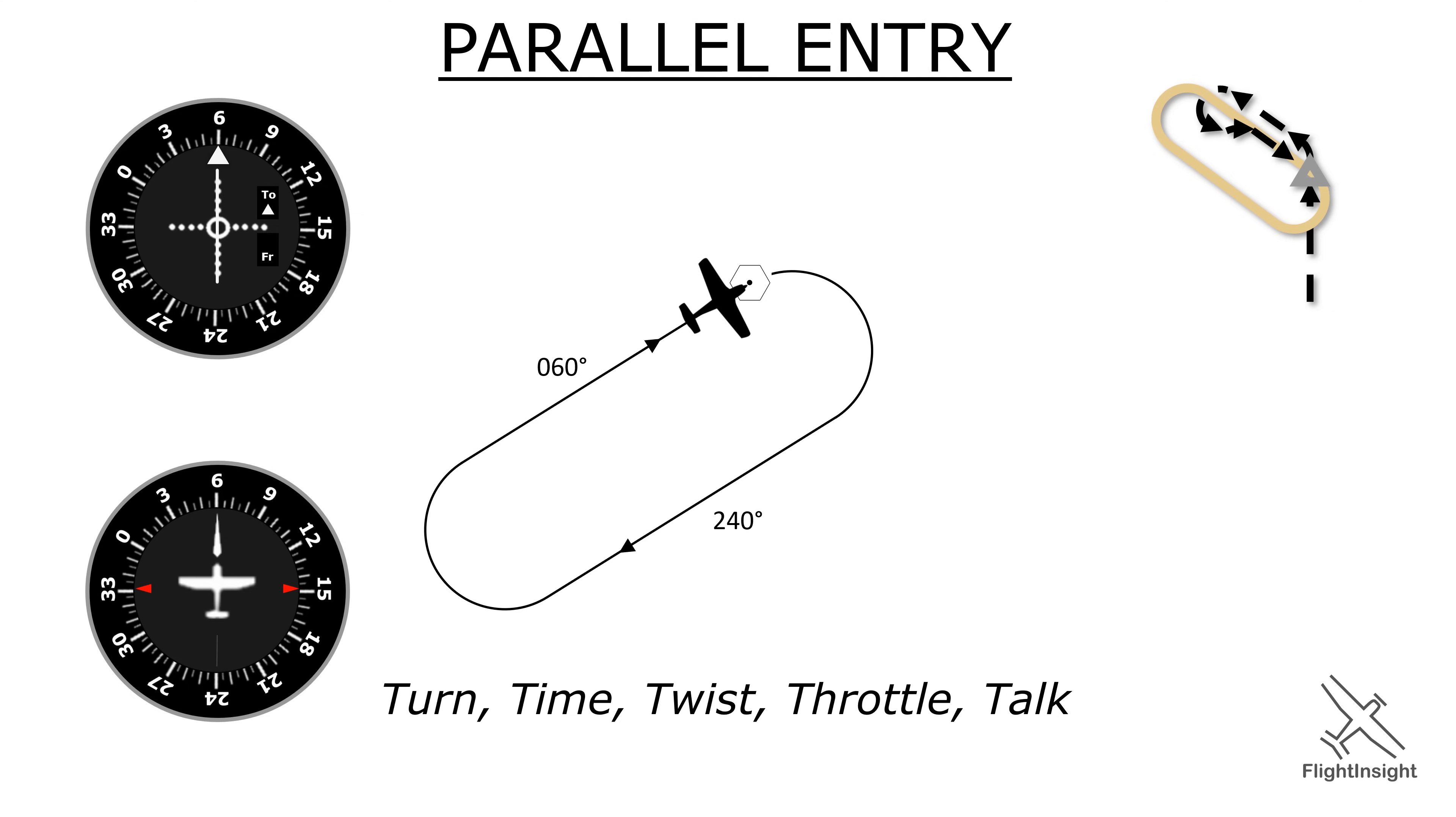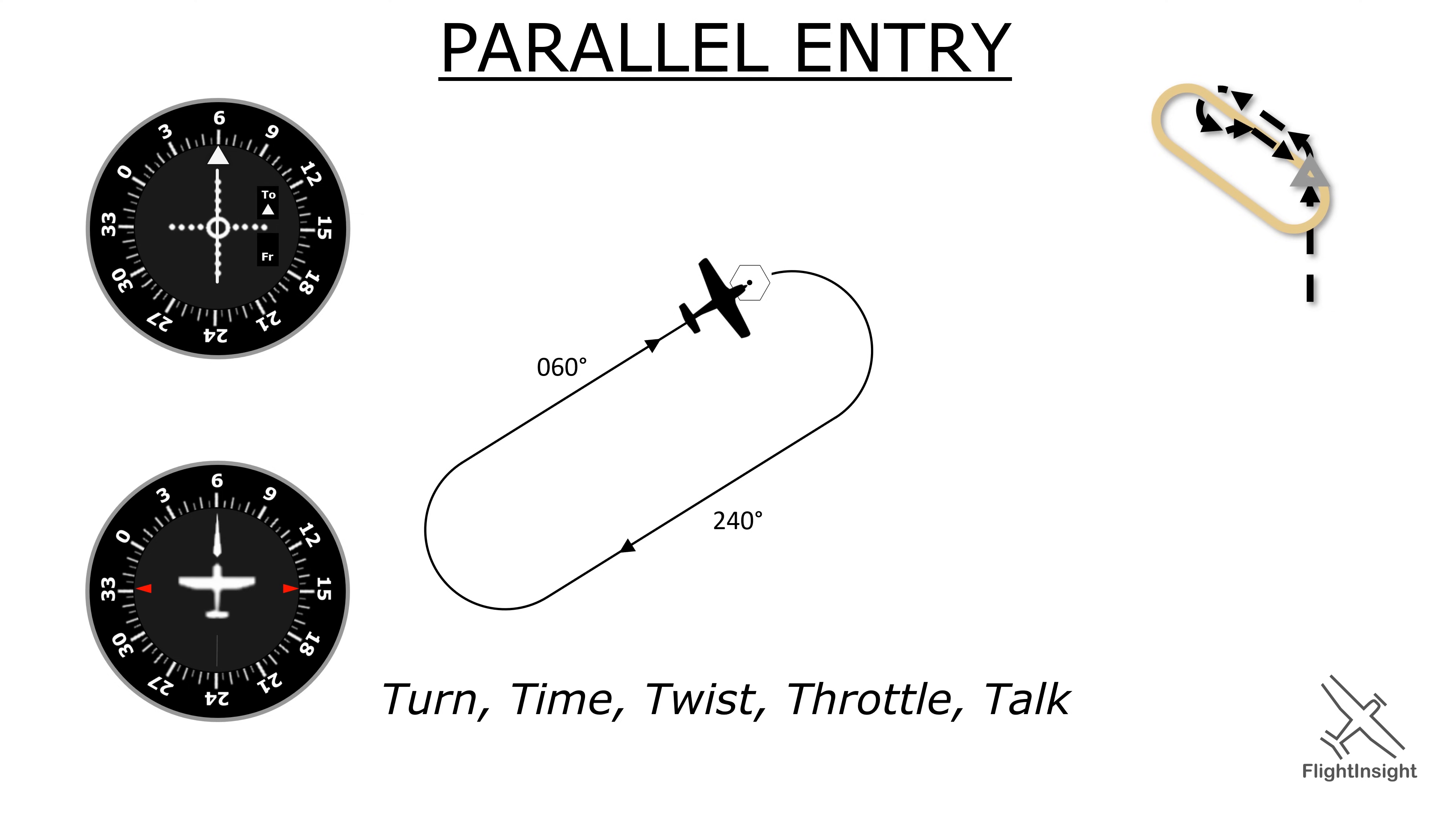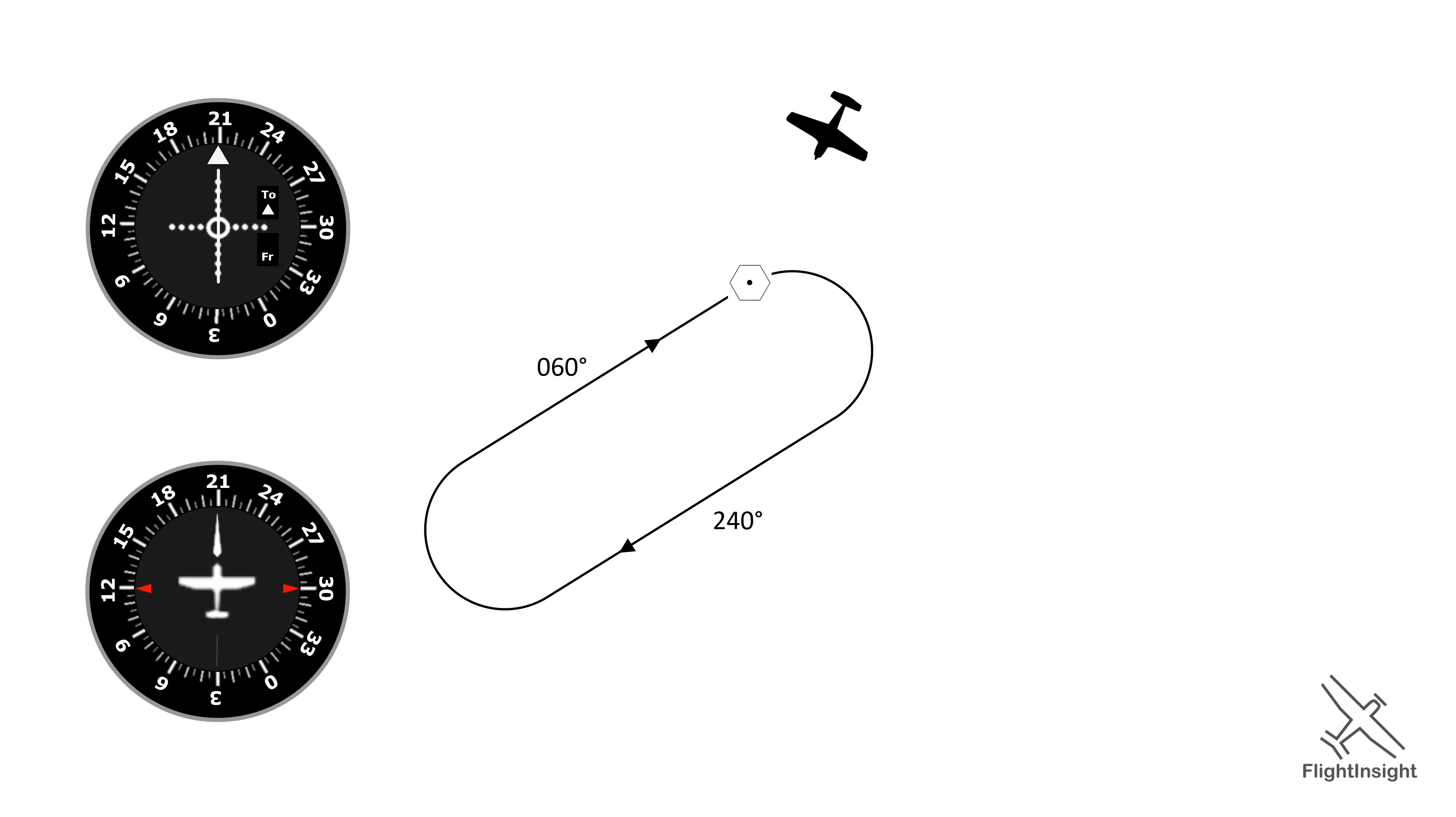This is the parallel entry. Next let's look at our plane starting from up here. Let's figure out our inbound course. It's 210 degrees. We'll fly that heading, and now let's look at the heading indicator up close.